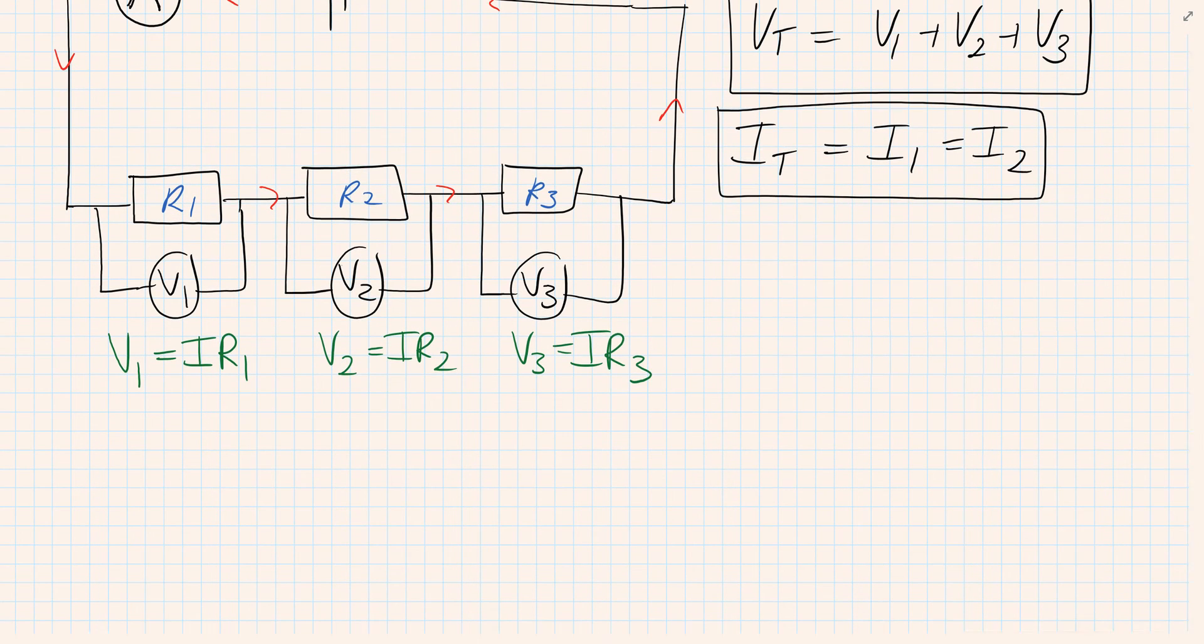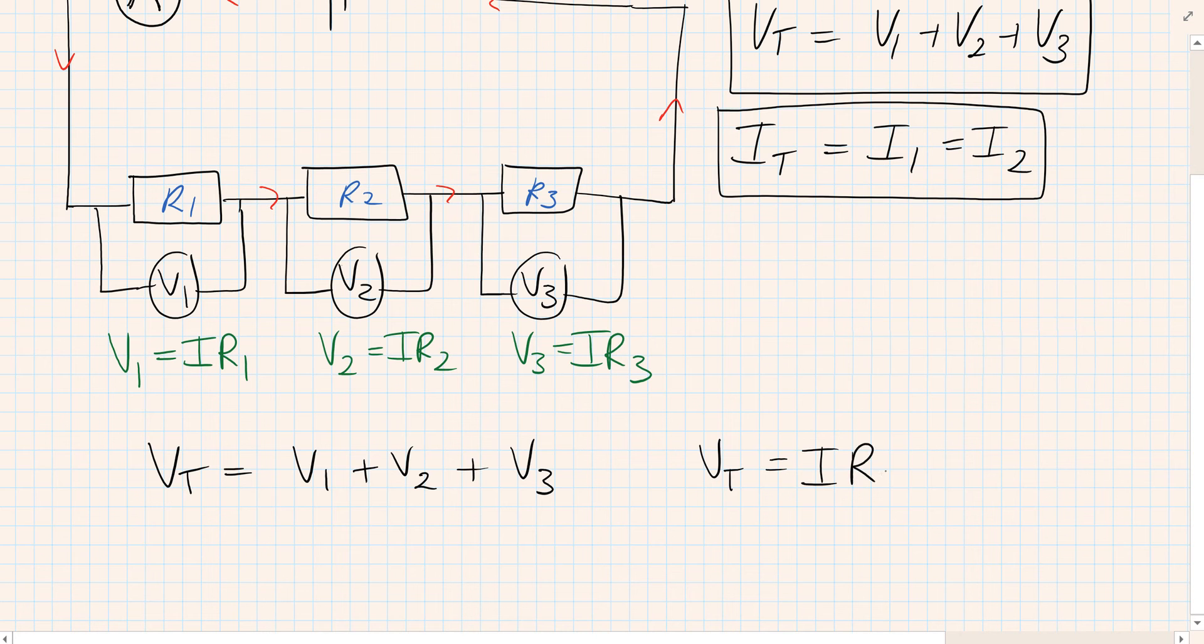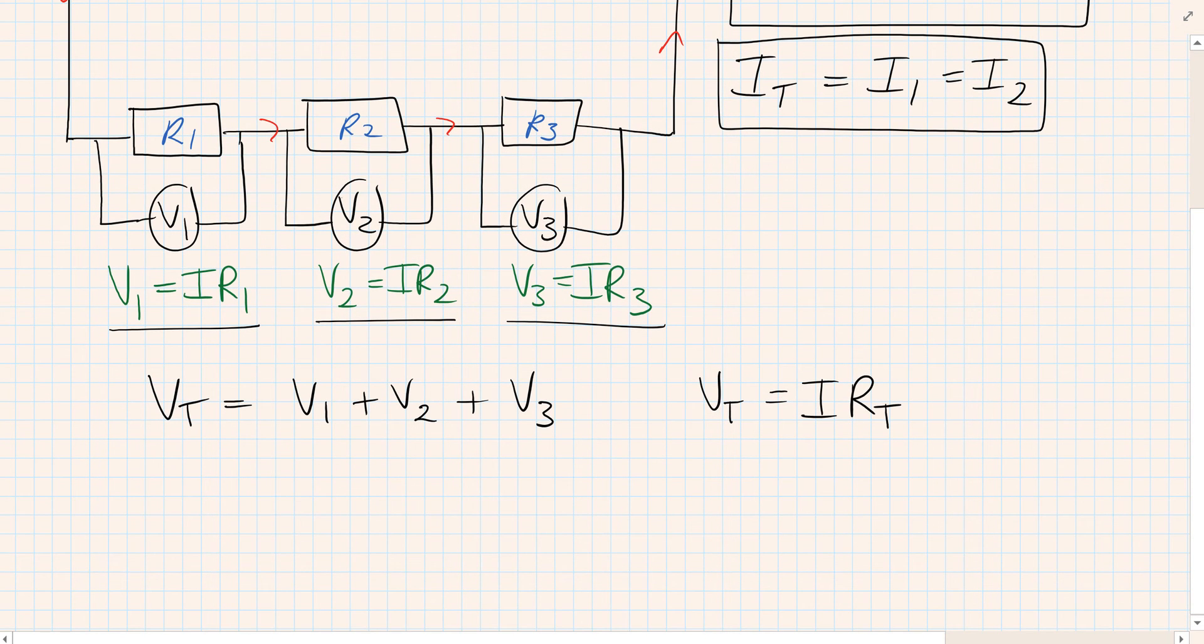From there we know that VT, the total voltage, is V1 plus V2 plus V3. We can replace our Vs with the Ohm's law expressions. So VT would be I RT, V1 is I R1, V2 is I R2, and V3 is I R3.